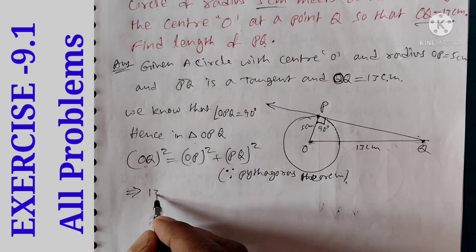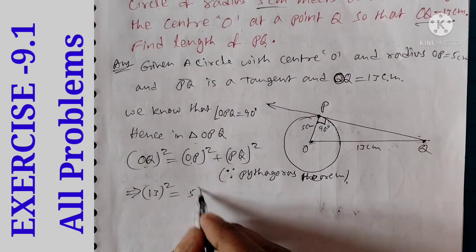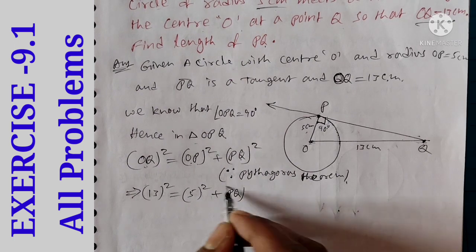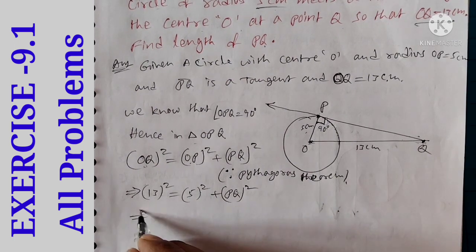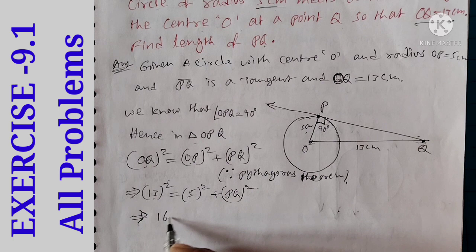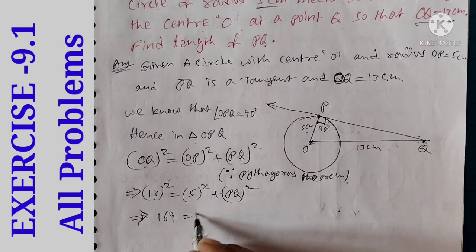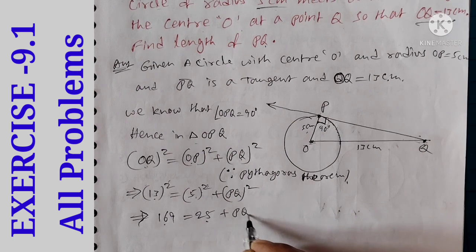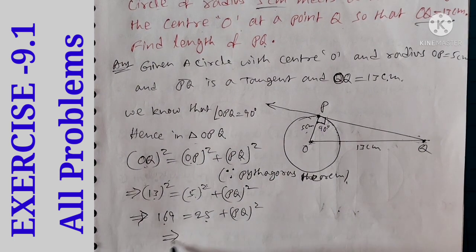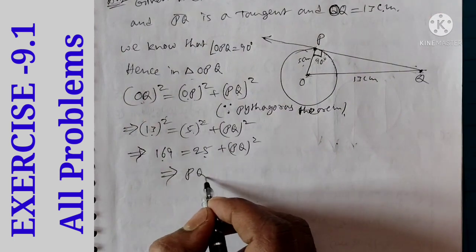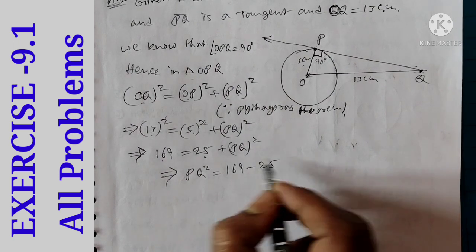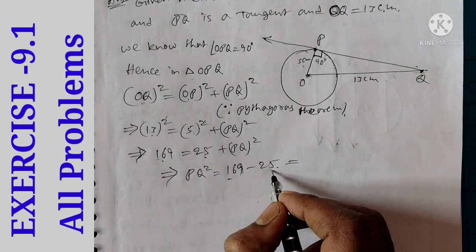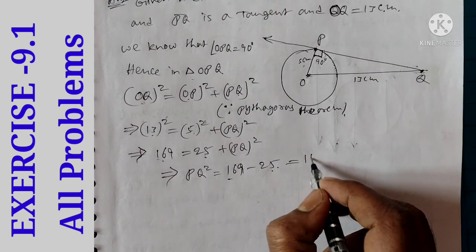OQ is equal to 13 squared. OP is equal to 5 squared. So: 169 equals 25 plus PQ squared. PQ squared is equal to 169 minus 25, which equals 144.